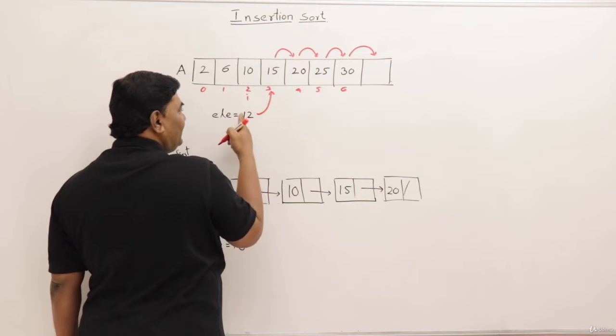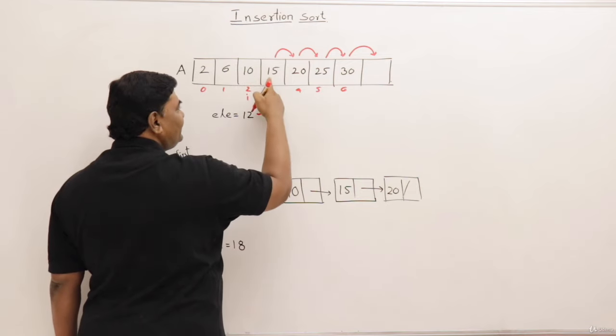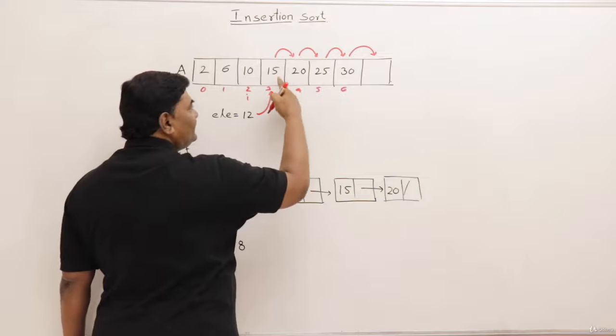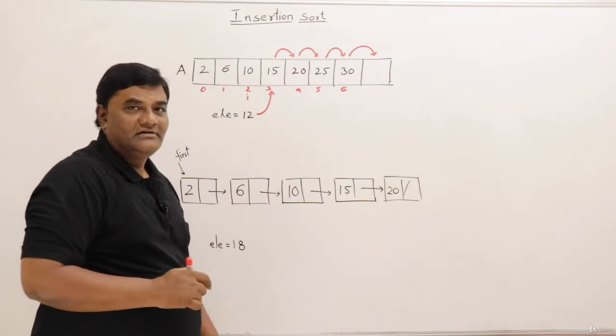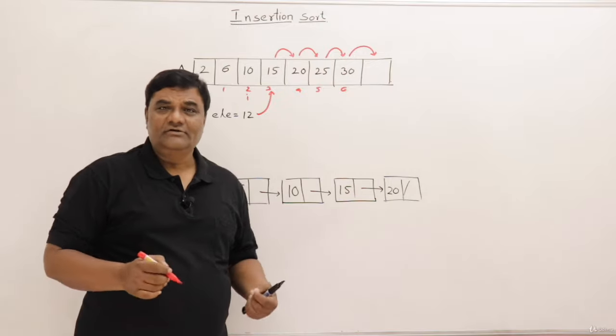Now right now here, 10 is not greater than 12. So this place is free. So this place, store the element 12. So all these elements will be shifted and 12 will be inserted here. So I don't have to search and find out its position.